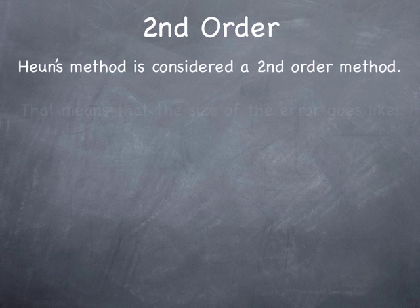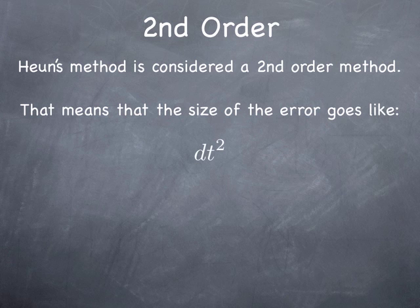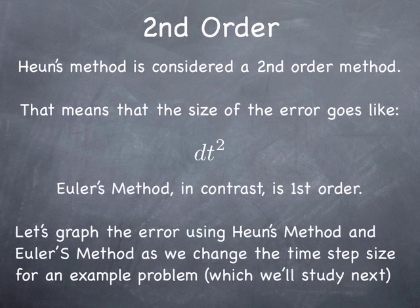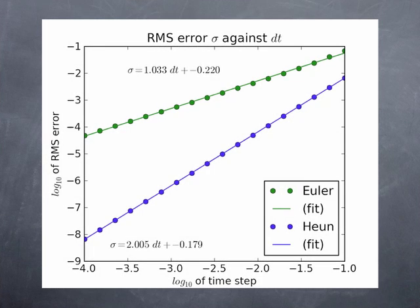Now, Heun's method is second order. What that means is the size of the error in the method goes like the time step size squared. Euler's method, in contrast, is first order. Let's make a graph of the error using Heun's method and Euler's method and see how the error varies with step size. The root mean square error as a function of step size. Actually, it's the log of the root mean square error as a function of the log of the step size. For Heun's method is shown here in blue and Euler's method is shown in green. There's also a straight line fit. Notice that Euler's method, the log of the error goes like one times the log of the time step. And the Heun's method, it goes like two times the log of the time step. That means that it really goes like the square of the time step.